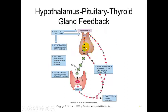Since T3 and T4 cannot perform this negative feedback, we continue to produce TSH. The TSH is constantly being secreted at very high levels, causing the thyroid to grow and grow, but it's no longer able to produce T3 and T4. Since it can't produce T3 and T4, we can't shut it down, so it just continues to grow. It's a cycle that cannot be broken without iodine - that's an endemic goiter.